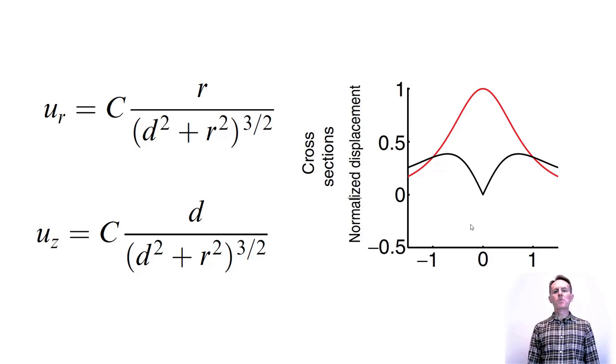According to the model, maximum uplift occurs directly above the source and then decays away from the source in a manner dependent on the depth of the source, as shown in the graph. The horizontal radial displacement is zero at the center and then initially increases with distance until a maximum is reached at a distance corresponding to about 70% of the source depth. At further distances, the amount of displacement decreases with distance. These characteristics can often be used when compared to observed deformation on a volcano to locate a pressure source beneath a volcano.